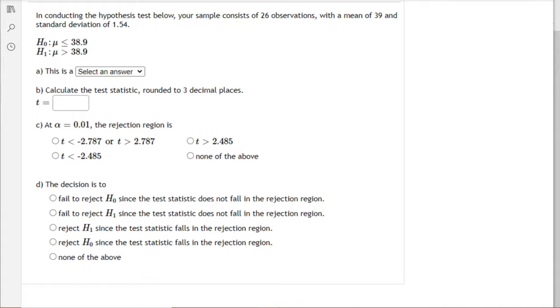In solving this problem, we're looking at a hypothesis test with the null and alternative hypotheses here. You have a sample of 26 items with a mean, so the sample mean is 39. The standard deviation is the sample standard deviation, which is 1.54. So you're given this information.